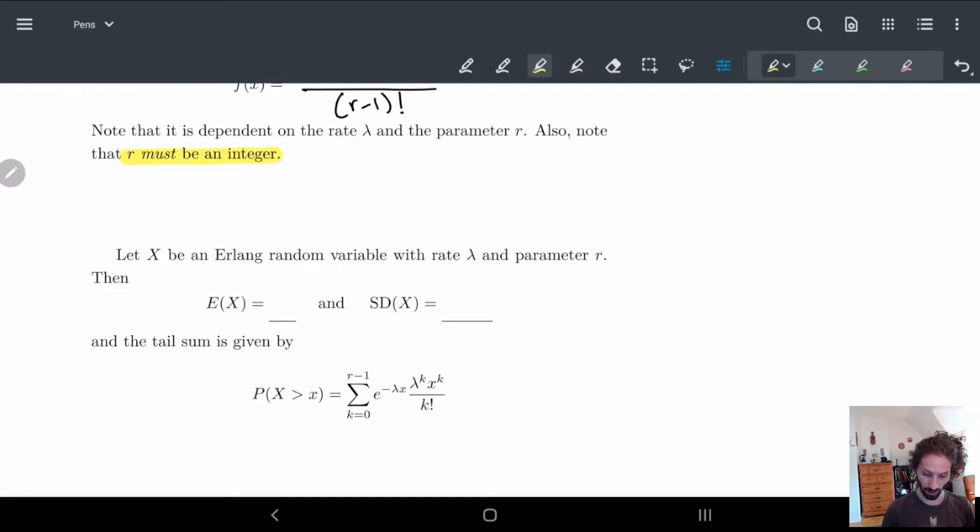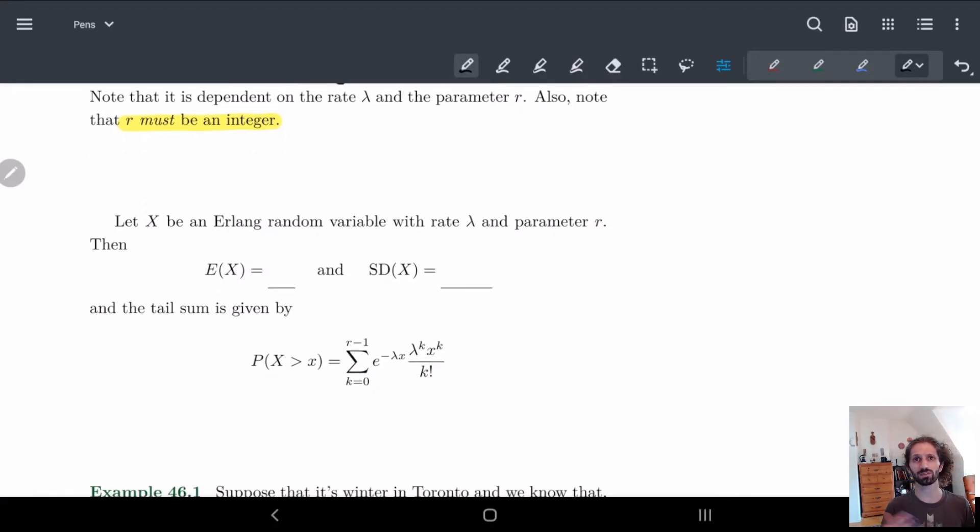And the nice thing about Erlang is it actually has very nice expected value and standard deviation. Which is not something we might expect. Or we might expect it since it's coming from the exponential one. So the expected value is just r divided by lambda. That's literally it. That's how simple this is. It's really not that bad. And the standard deviation is square root of r divided by lambda. So these are super, super, super easy.